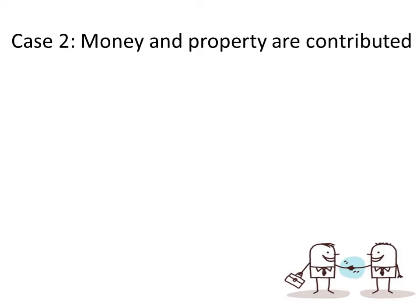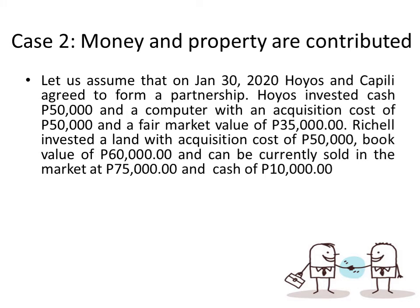Next, what if the contribution is money and property? Let's assume that on January 30, Huya's and Kapili agreed to form a partnership. Huya's invested cash $50,000 and a computer with an acquisition cost of $50,000 and a fair market value of $35,000. Kapili invested land with an acquisition cost of $50,000, a book value of $60,000, and currently sold in the market at $75,000, and cash $10,000. Property should be valued at fair market value, so we disregard the acquisition cost and record it at market value. Huya should shoulder the loss because he was the one who first used this computer, not the partnership itself.